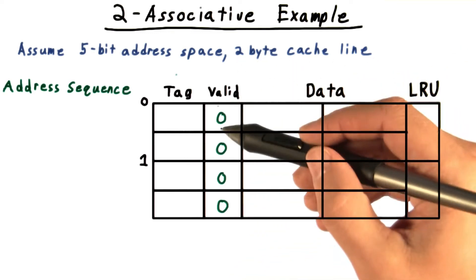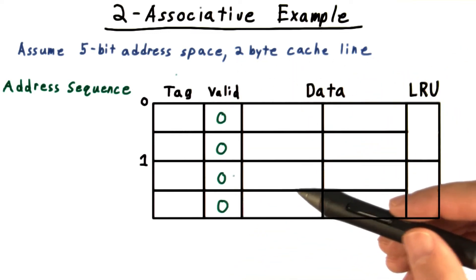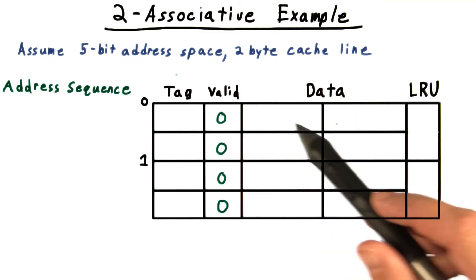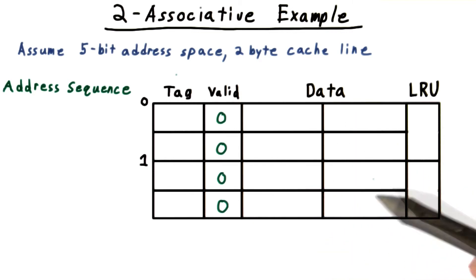Notice that I've added a valid bit to our cache here so that we can tell whether data has ever been loaded up to a line in the cache. Uninitialized caches are called cold.